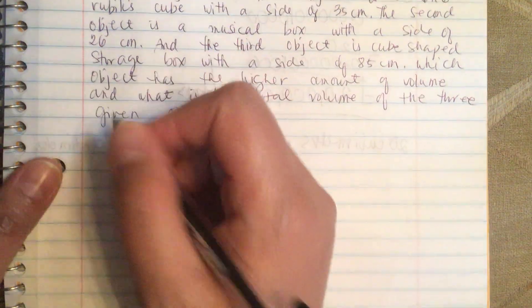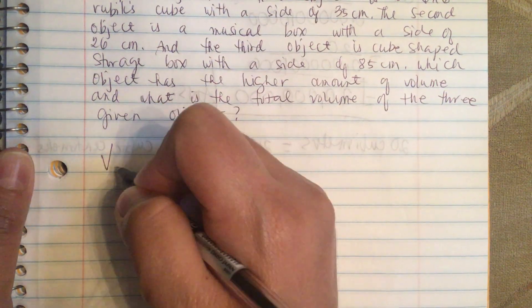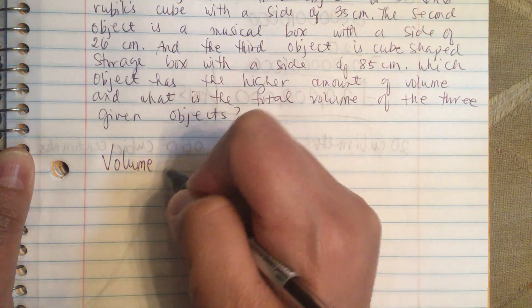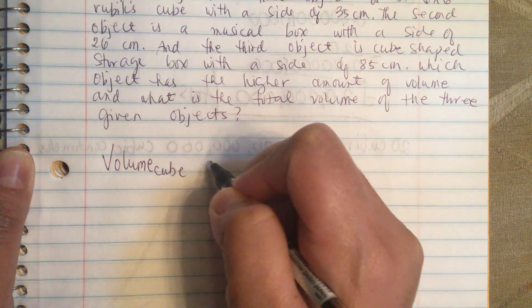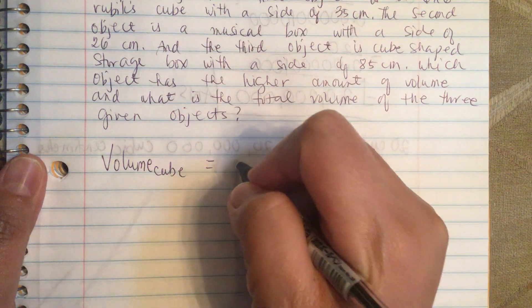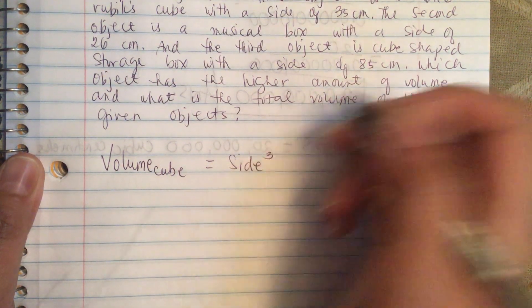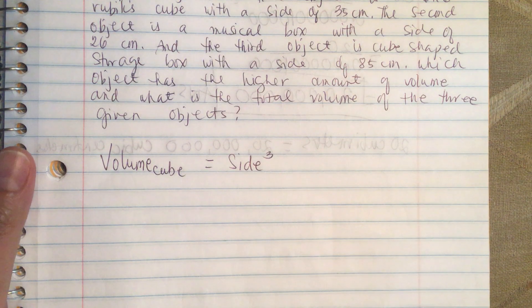So the volume of a cube, volume of a cube is equal to side cubed or the side three times.